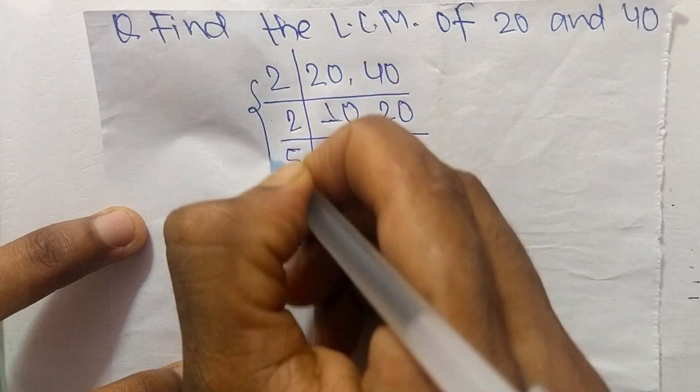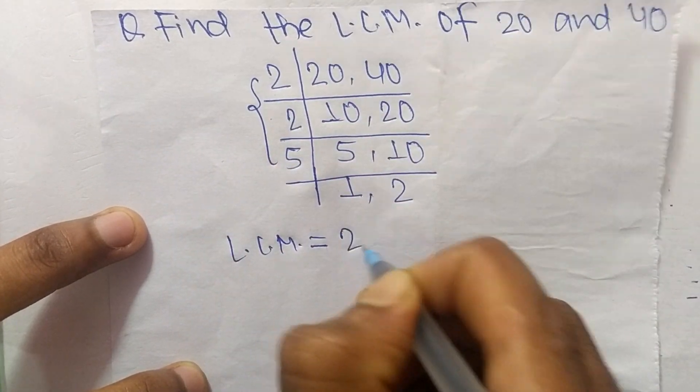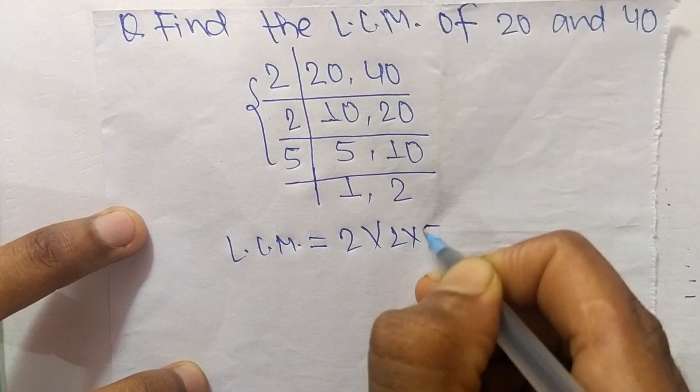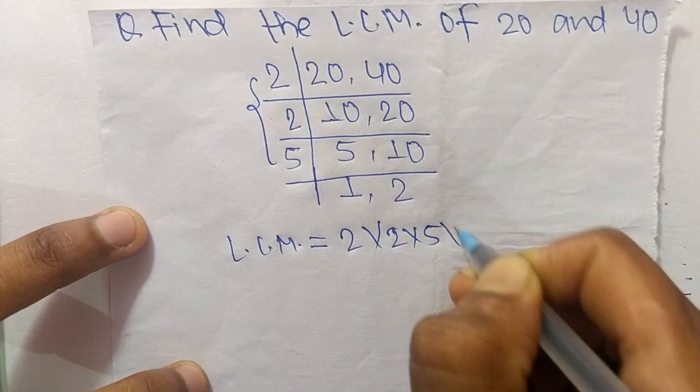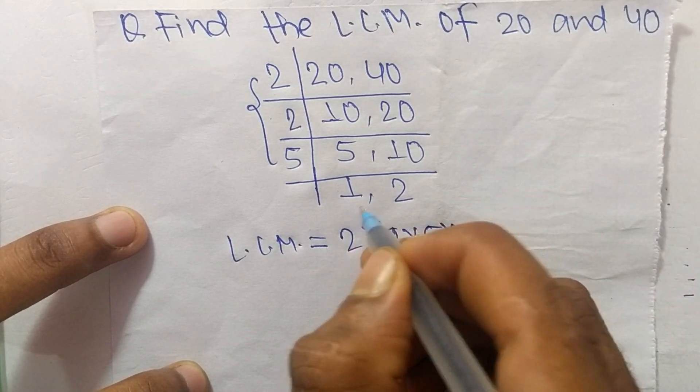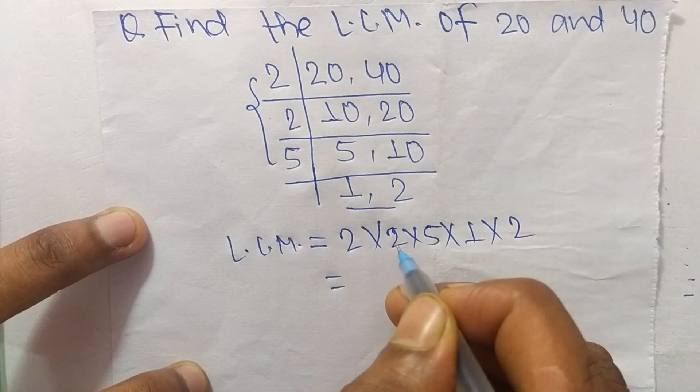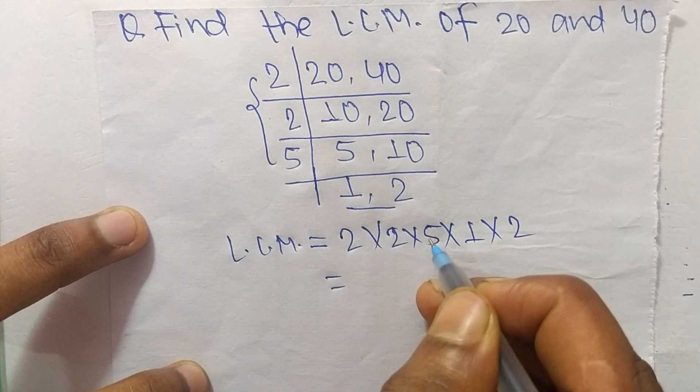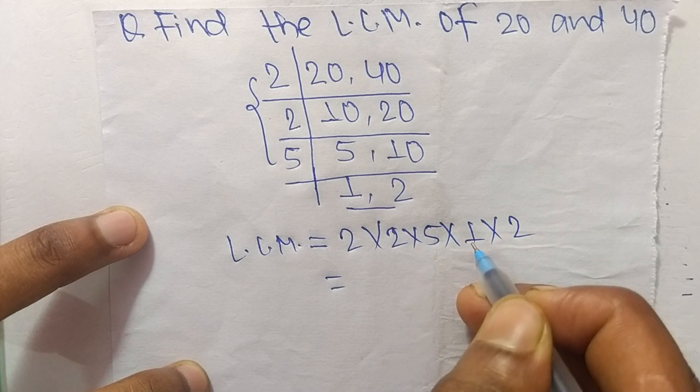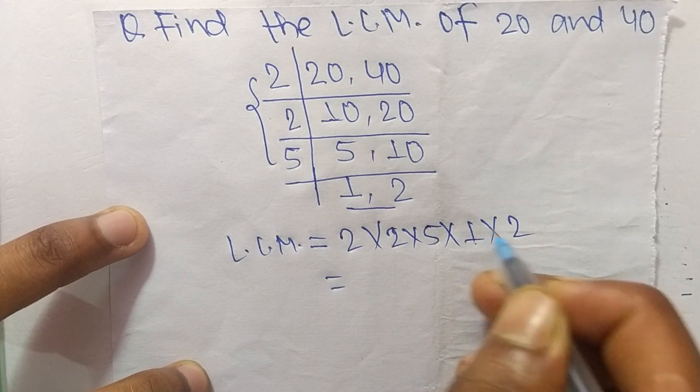So the LCM is equal to from this part, 2 times 2 times 5, times from this part, 1 times 2. So 2 times 2 is 4, 4 times 5 is 20, 20 times 1 is 20, 20 times 2 is 40.